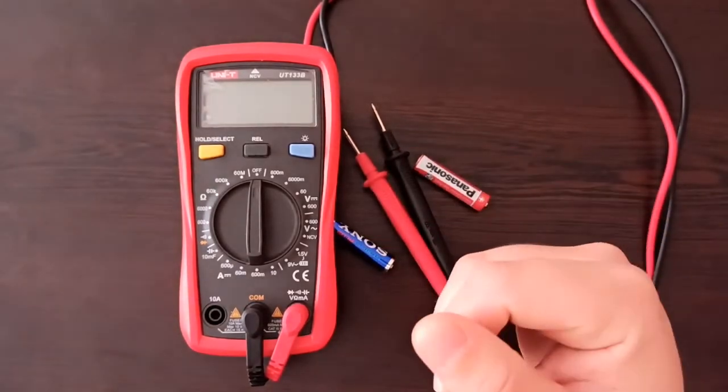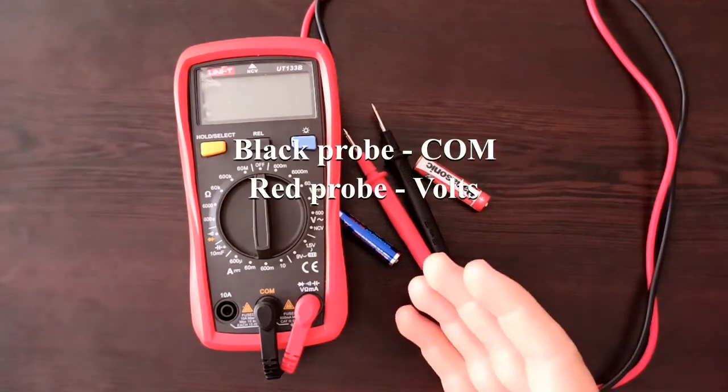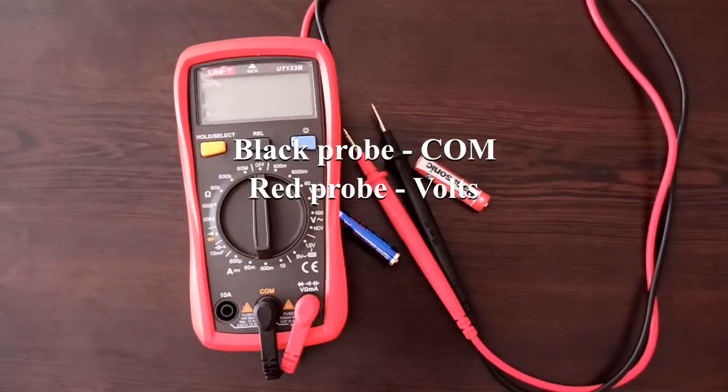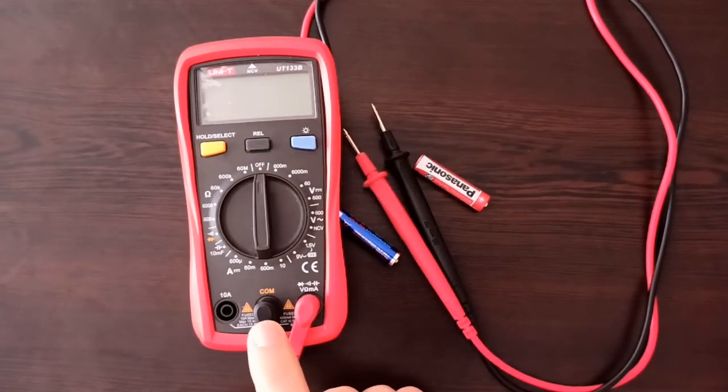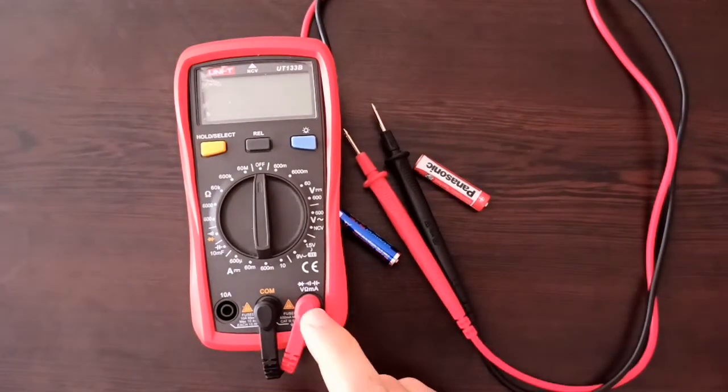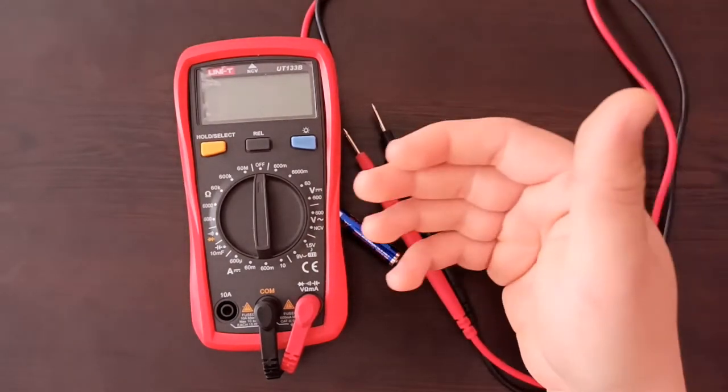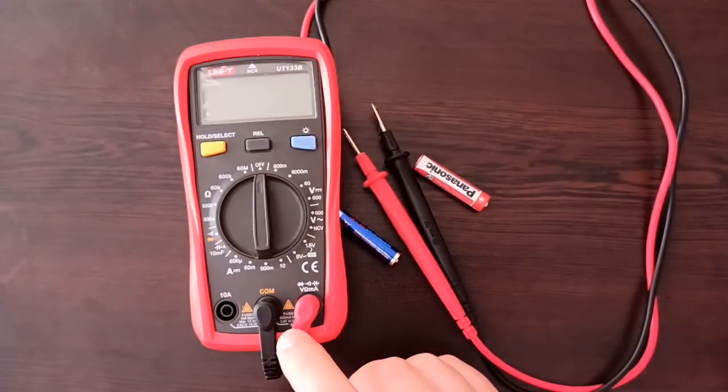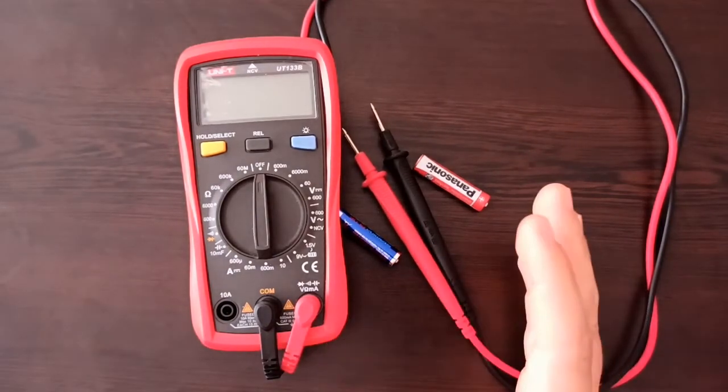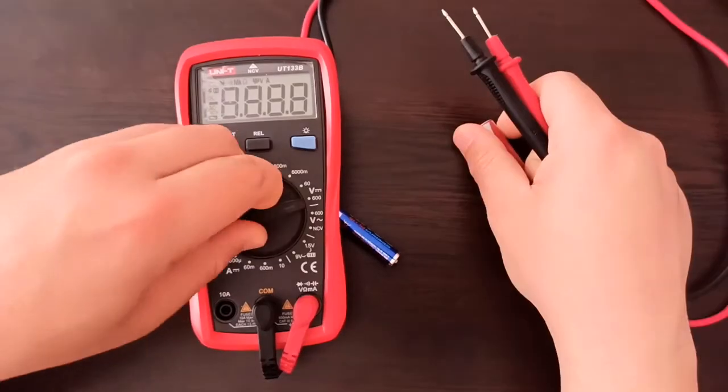Doesn't matter if we're talking about batteries, car batteries, or AC voltage—the range always must be more than what you expect to measure. Another very important thing when measuring voltage is to check the correct position of the probes. The black one must be on the common always, and the red one should be on the voltage socket for voltage settings.